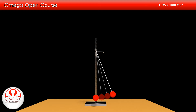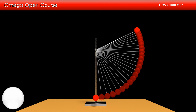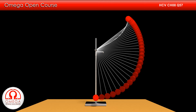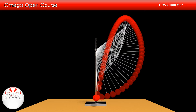So the string starts becoming slack at the point where the component of gravity along the string balances the centrifugal force. Once the string is slack, the tension in the string vanishes. Then the only force acting on the particle is gravity, and it starts projectile motion and moves on a parabolic path.